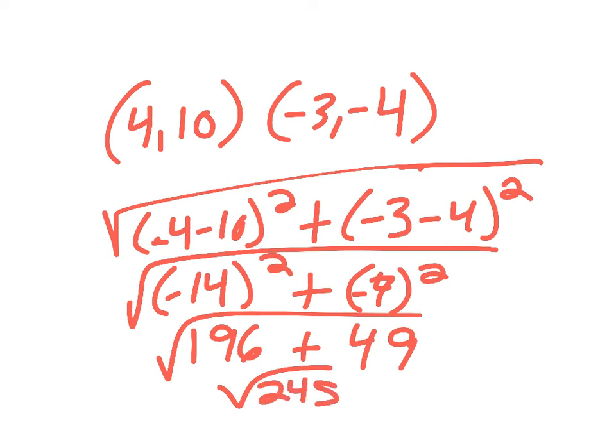So you'll notice whenever I square, I end up with a positive, because I'm doing negative 14 times negative 14, or negative 7 times negative 7. When I have two negatives, I have to have a positive answer. Alright, we're going to use this information tomorrow in class. Thanks for watching!